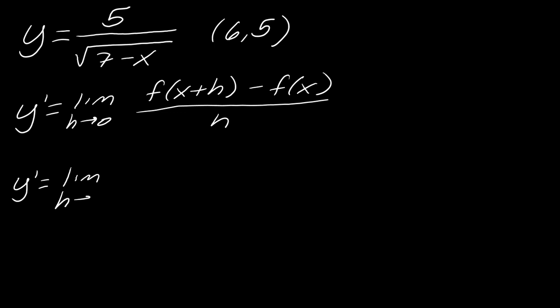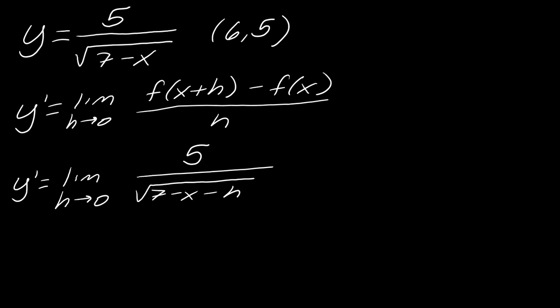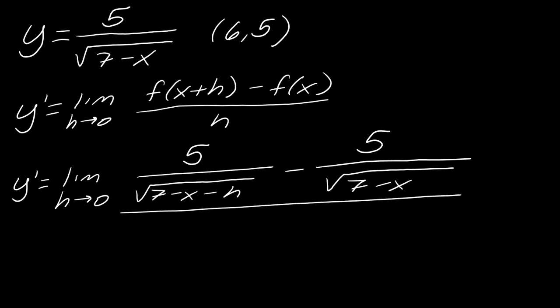So next I want to go ahead and plug in everything. So this is going to be 5 over the square root of 7 minus x minus h, minus 5 over the square root of 7 minus x, and then all of that over h. So looking at what we've got now, we've got a limit with a fraction — two sets of fractions within a greater fraction. So the general thing that you want to do is clear the denominators. You might think you can just make common denominators on top, but that tends to make the problem a little bit more complicated.